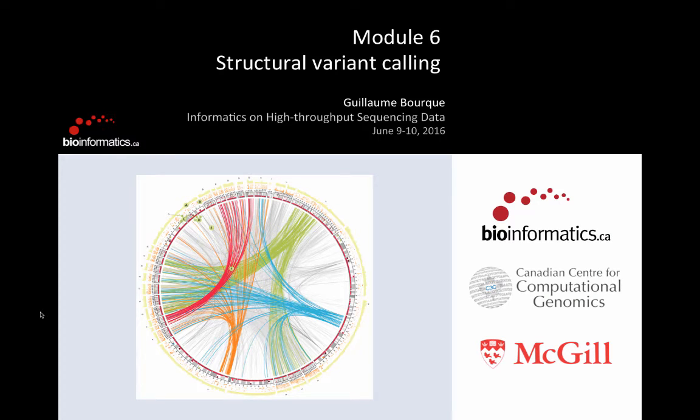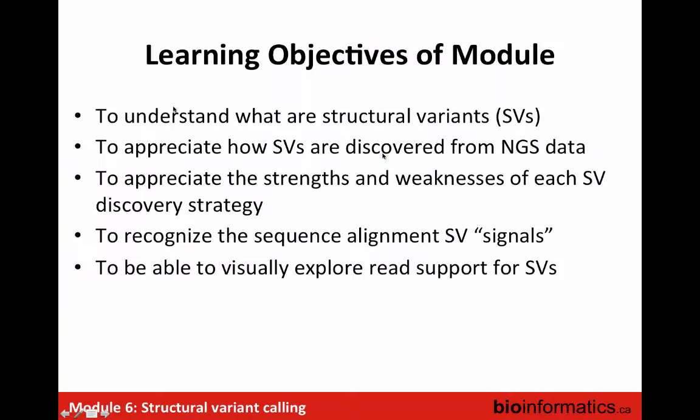Starting from the beginning, we're now going to be looking at not just calling single nucleotide variants and small indels, but looking for larger structural variants. The objective of this module is to understand what structural variants are and how you can discover them from next-generation sequencing data. There are lots of different ways, and it's harder to detect structural variants than single nucleotide variants — I'll explain the strengths and weaknesses of the different methods.